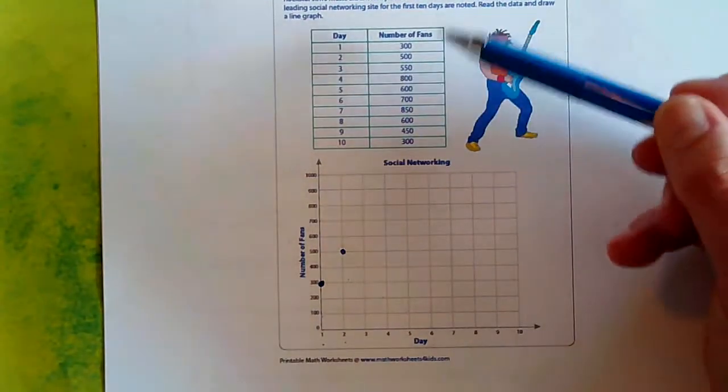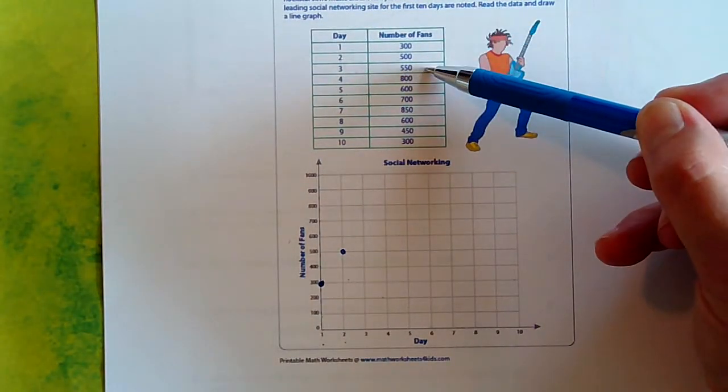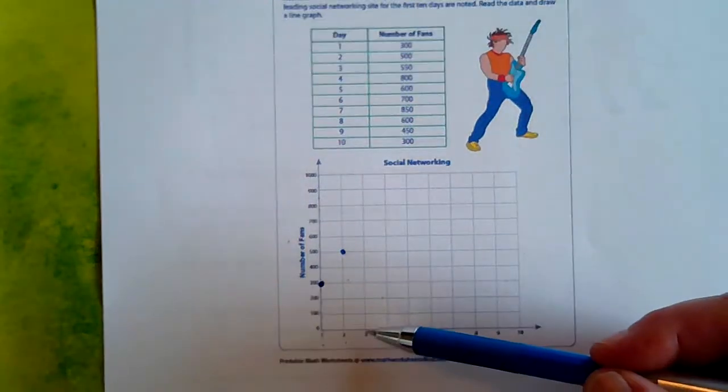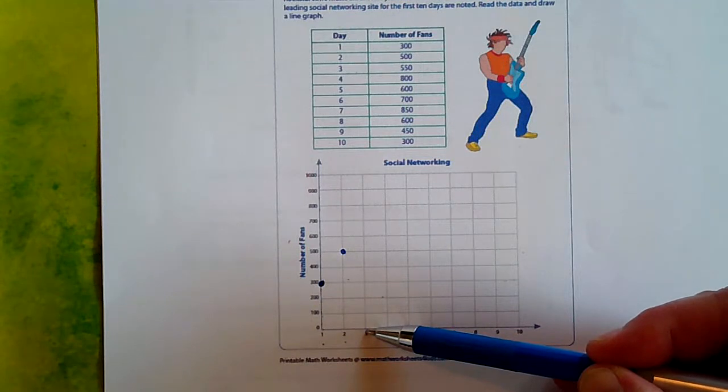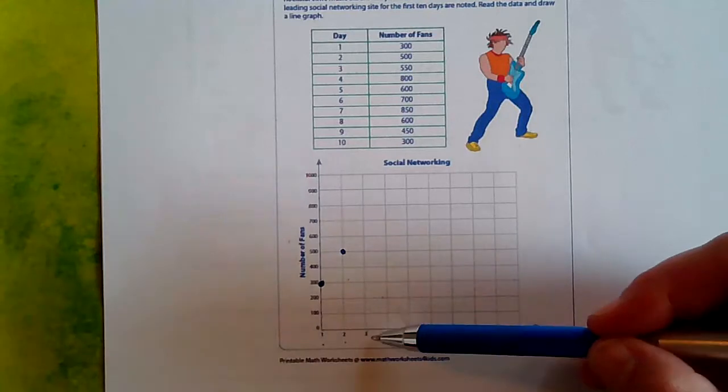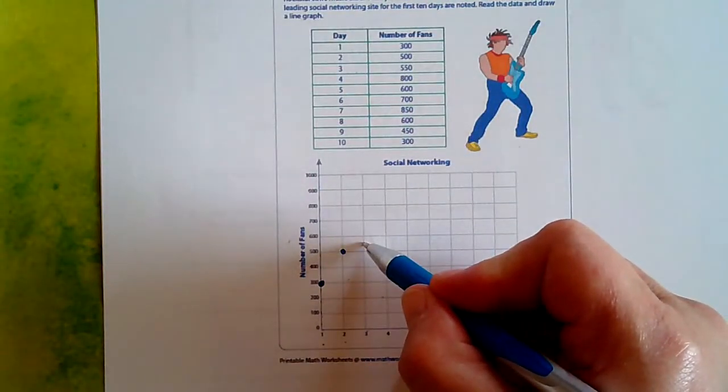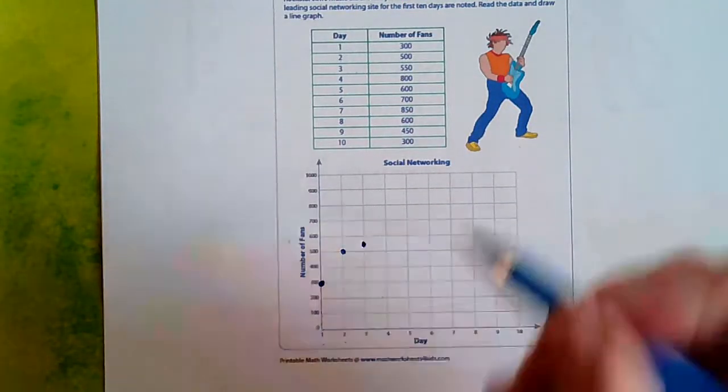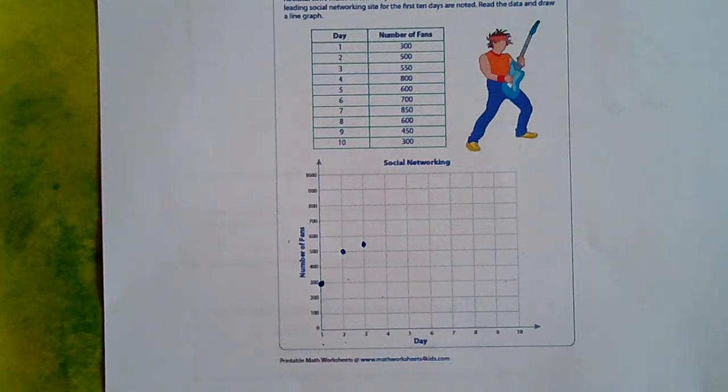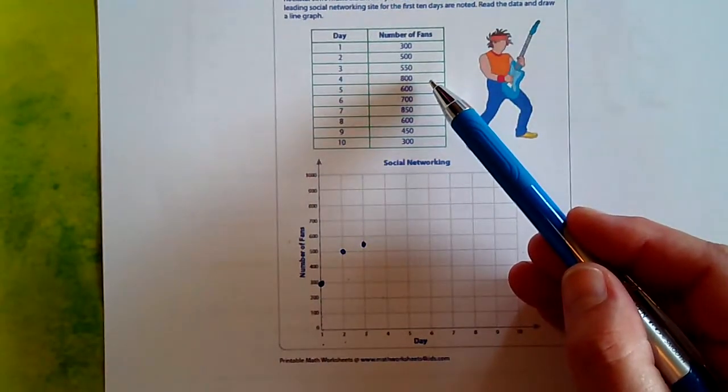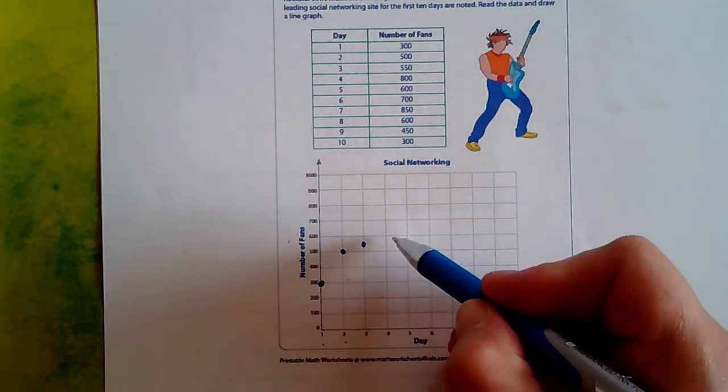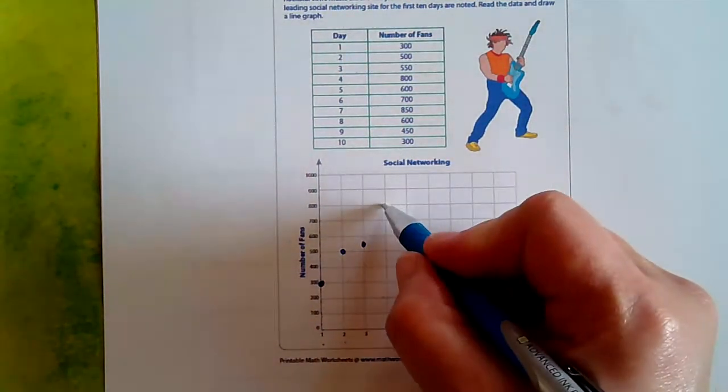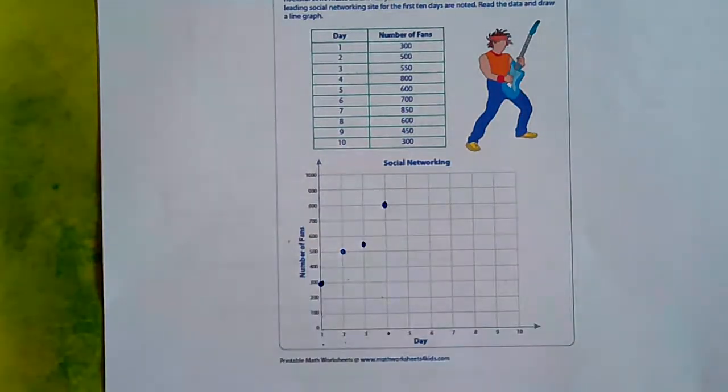On day three, there were 550 fans. So we're going to go to day three. Now, there's not a 550, but we know that 550 is halfway in between 500 and 600. So we're going to go up and draw a point right in between 500 and 600. On day four, Jim had 800 fans. So day four, we're going to climb up until we get to 800 and then draw our point.